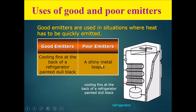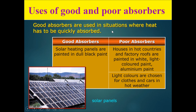Why are metal teapots shiny? These surfaces are poor emitters of radiation, which means a metal teapot containing hot tea will not cool down as fast, because the shiny surface emits radiation at a slower rate — so you can enjoy your hot tea for a longer time.